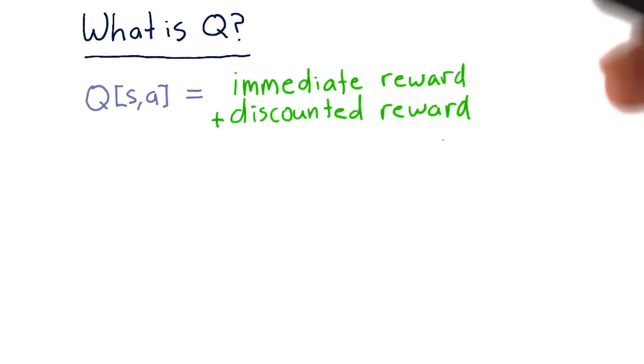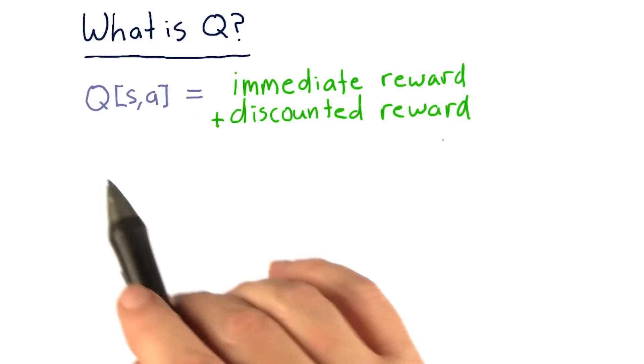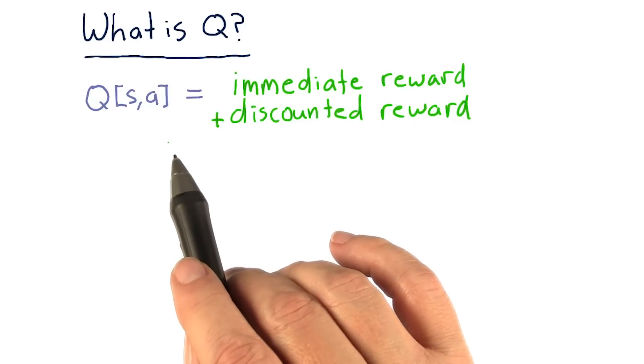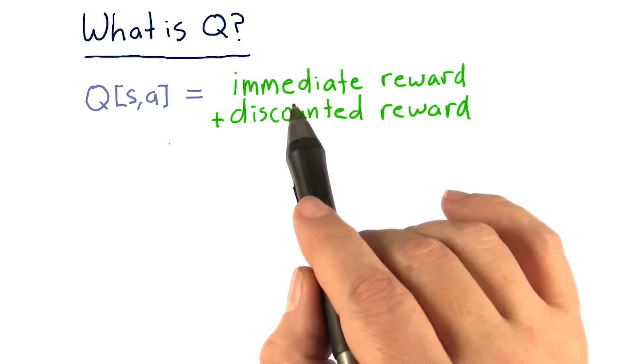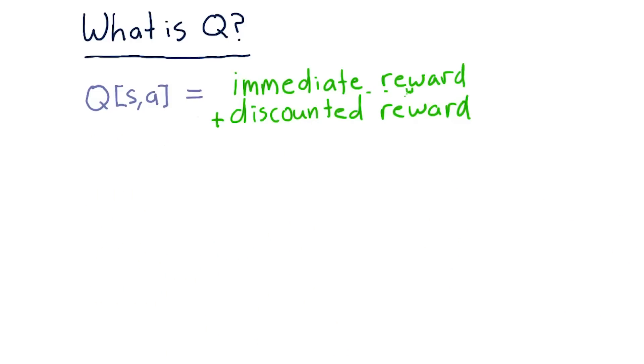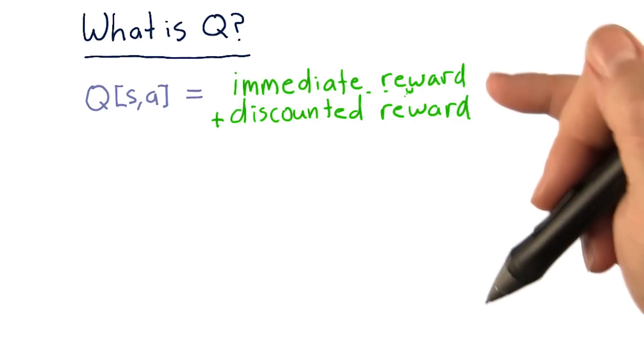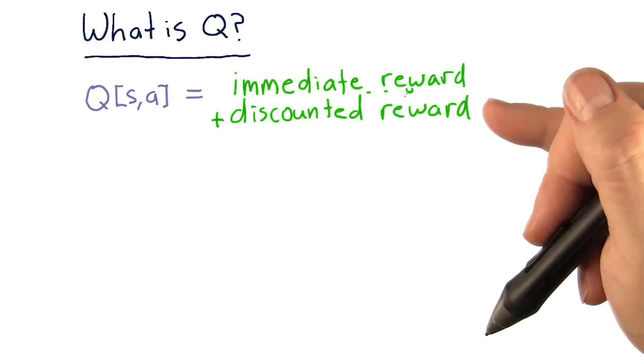is the reward you get for future actions. So an important thing to know is that Q is not greedy in the sense that it just represents the reward you get for acting now. It also represents the reward you get for acting in the future.